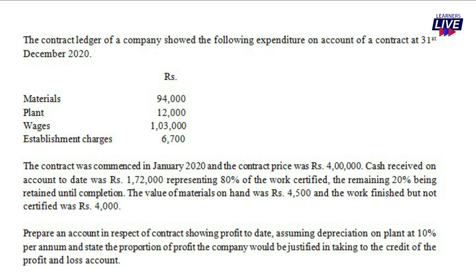Prepare an account in respect of the contract showing profit to date. Assuming depreciation on plant is $10,000. State the proportion of profit the company would be justified in taking to the credit of the profit and loss account. Then prepare the contract account, work in progress account, contractees account, and balance sheet.